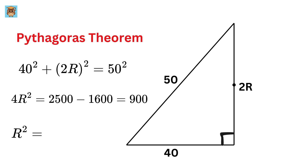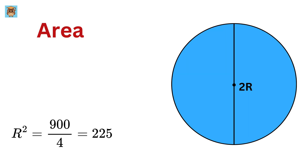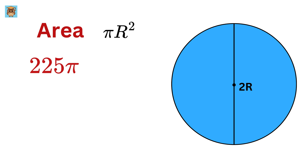R squared equals 900 over 4, or 225. The area is equal to pi times R squared, or 225π. This is our final answer.